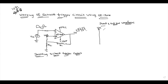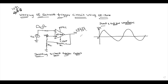We draw V in with a zero reference line. The waveform shows a maximum point at the top peak — that is the positive maximum voltage V max — and at the bottom is the negative peak, which is minus V max, the negative maximum voltage.